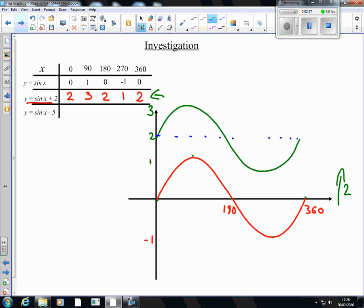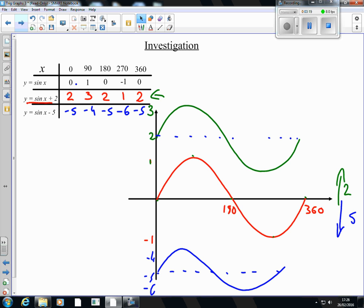Now, by the same token, when we look at sin x minus 5, again working from that sin x here, it's going to be negative 5, negative 4, negative 5, negative 6, and back to negative 5. So we've got the same graph as the sin graph that we started with, but it's moved down 5 places. So it's going to be somewhere down here, starting at negative 5, coming up to negative 4, down to negative 6, and back to negative 5. And again, the middle line does help you keep it neat. So that's your basic idea. If you have a number at the end of your trigonometric graph, it's going to move your graph up and down.